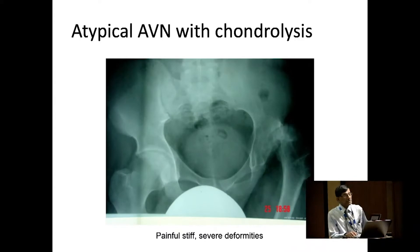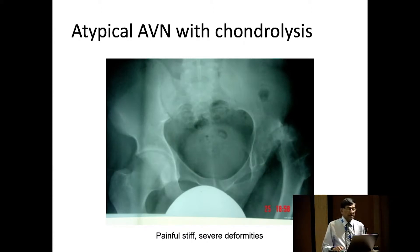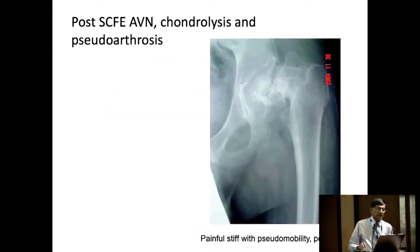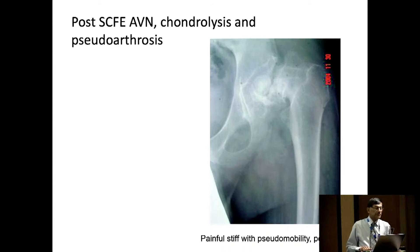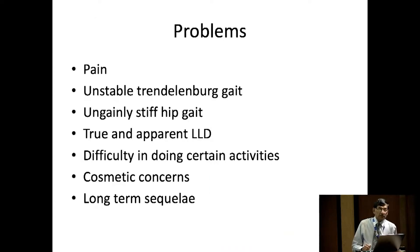We sometimes get in the teenage age group atypical AVN. I don't like to call it Perthes disease because they don't follow any of the stages and they have severe chondrolysis and stiffness. And this is another one where usually after intervention — post-SUFE AVN — chondrolysis and pseudoarthrosis. In this example, it's a painful stiff hip with pseudo-mobility at the non-union site at the physis and poor gait.